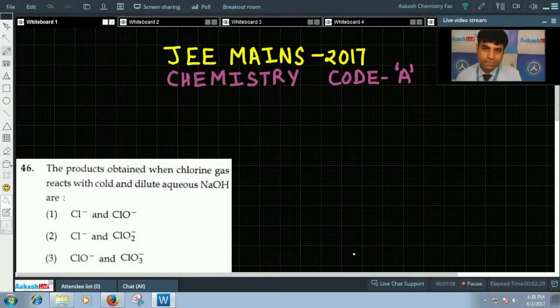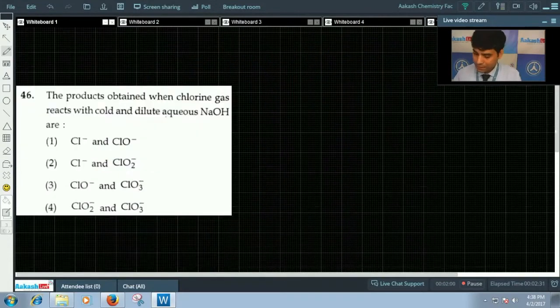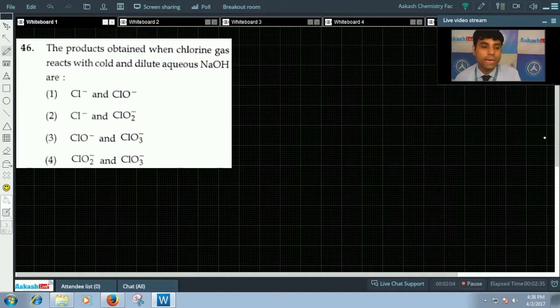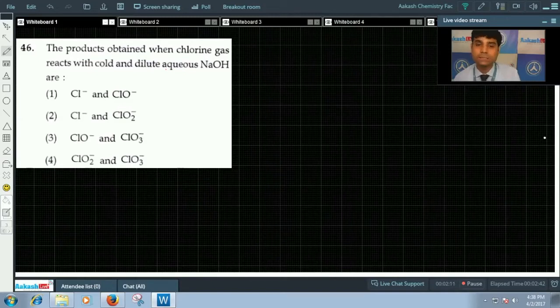Question number 46 says: the products obtained when chlorine gas reacts with cold and dilute aqueous NaOH are. The options are: option 1 says Cl⁻ and ClO⁻, second option is Cl⁻ and ClO2⁻.